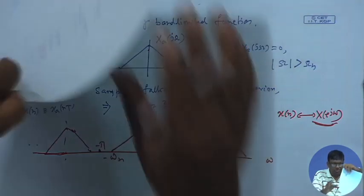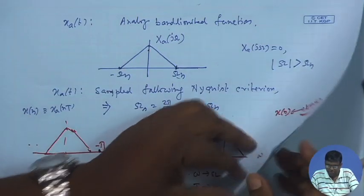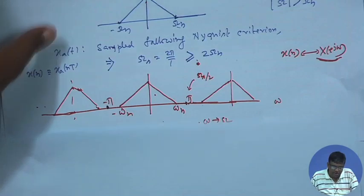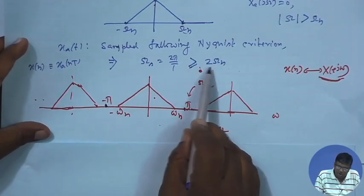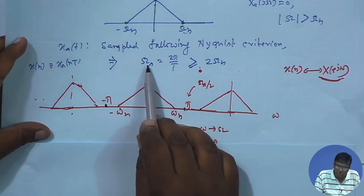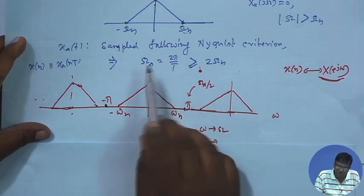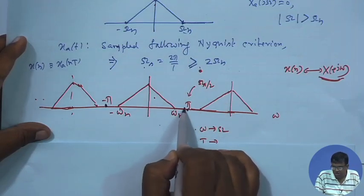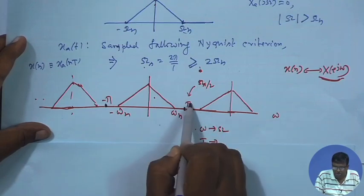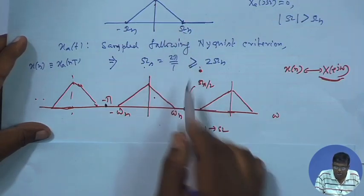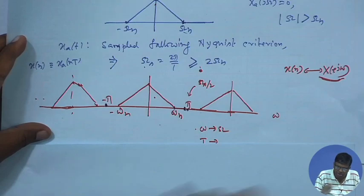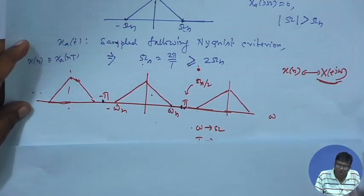This leads to an interesting question about the DTFT. Since capital Omega_s ≥ 2*Omega_h, the half sampling frequency Omega_s/2 ≥ Omega_h, and half the sampling frequency maps to π, so capital Omega_h maps to small omega_h. Whenever there is no aliasing, π ≥ omega_h. We are assuming no aliasing because the Nyquist condition was satisfied.